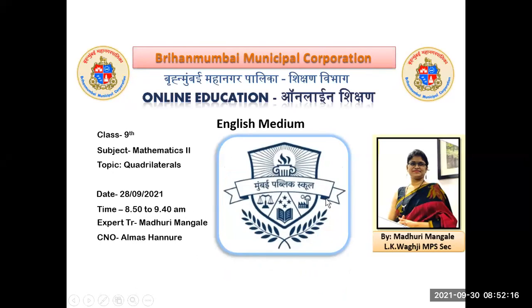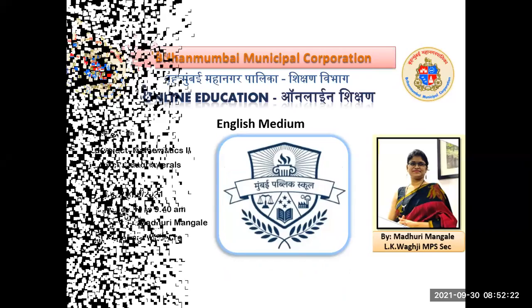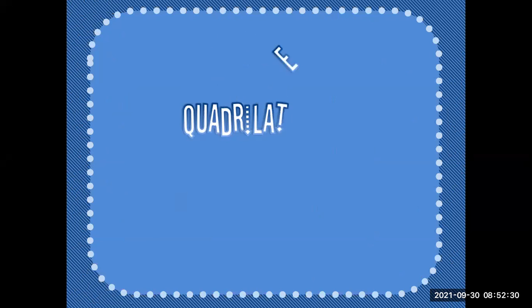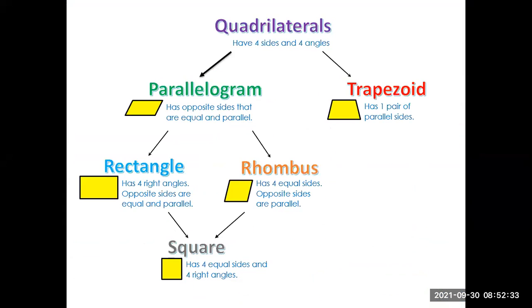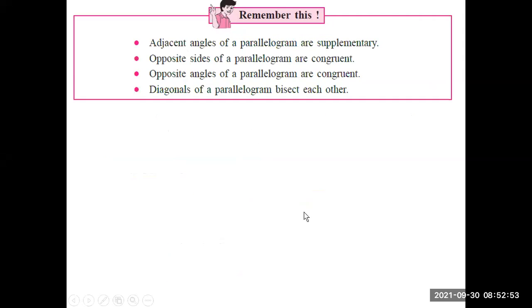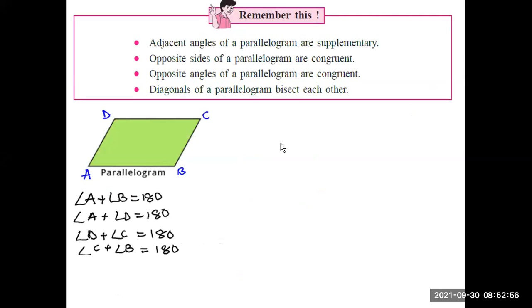Good morning everyone. Yesterday we were looking at Mathematics 2, the chapter named quadrilaterals. Let's quickly recap. First, the definition: a closed four-sided figure is called a quadrilateral. Then the family tree: quadrilaterals are classified into parallelograms and trapezoids. A parallelogram has two pairs of parallel and equal sides, whereas a trapezoid has only one pair of parallel sides. Further, parallelograms are classified into rectangles and rhombuses, where a square is a special form of both rectangle and rhombus.